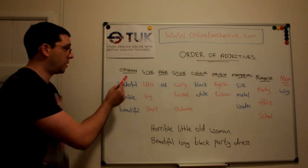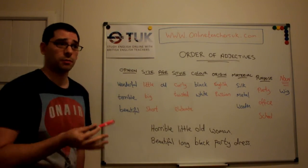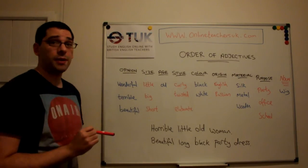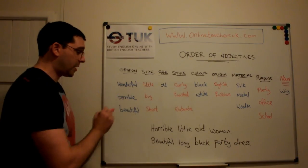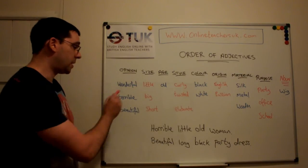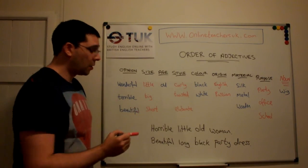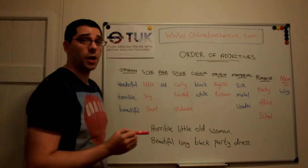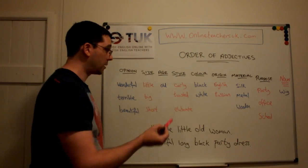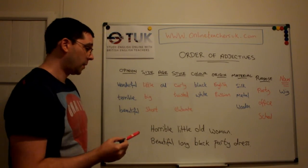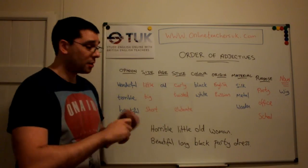So here, the first one — opinion. This is your personal opinion about something; it's your subjective opinion about the noun that you're talking about. So it could be wonderful, terrible, beautiful, or any other opinion-related adjective. Size is the next one: little, big, short. Moving along we have age, so it could be old, 24 year old, young, and any adjectives that might relate to age. Style: curly, twisted, elaborate — lots of adjectives would fit into this category.